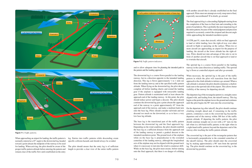The entry leg should be of sufficient length to provide a clear view of the entire traffic pattern and to allow adequate time for planning the intended path in the pattern and the landing approach. The downwind leg is a course flown parallel to the landing runway, but in a direction opposite to the intended landing direction. This leg is flown approximately half to one mile out from the landing runway and at the specified traffic pattern altitude. Pattern altitude is maintained until at least abeam the approach end of the landing runway, at which point the pilot should reduce power and begin a descent.